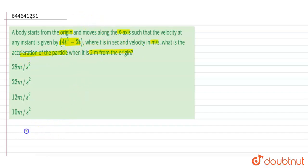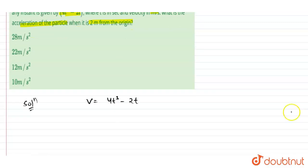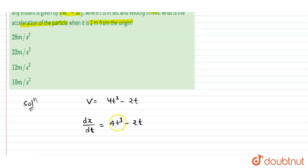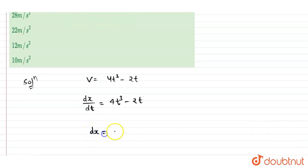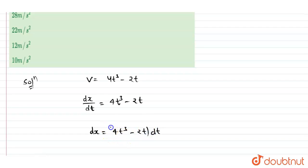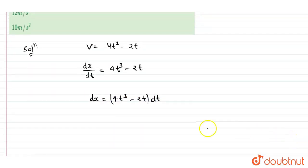We have been given the velocity at any instant as 4t³ minus 2t. We know that velocity can be written as dx over dt, which equals 4t³ minus 2t. We can rewrite this equation as dx equals 4t³ minus 2t dt.